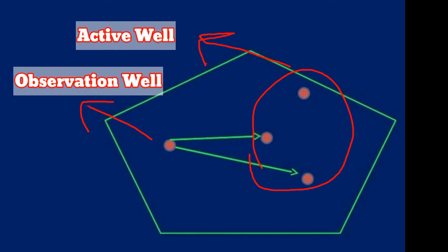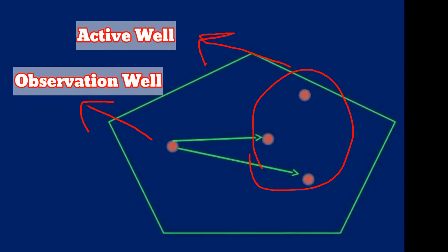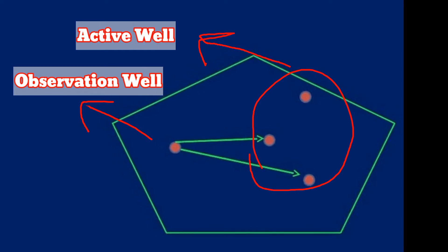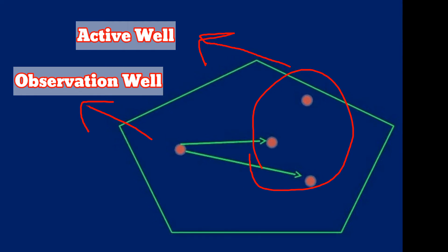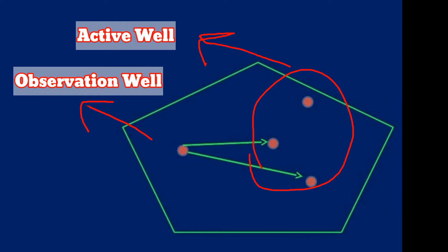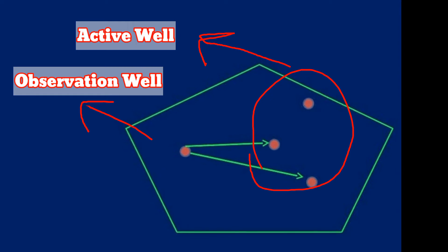What is an observation well? One well called the observation well in which pressure variation is observed by changing the normal production rate of the active well or transmitter wells.